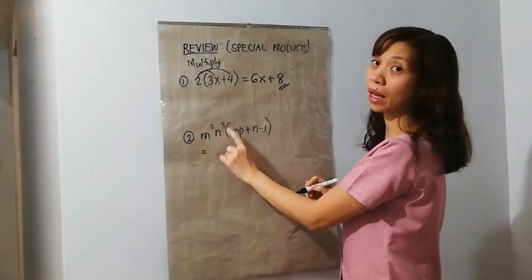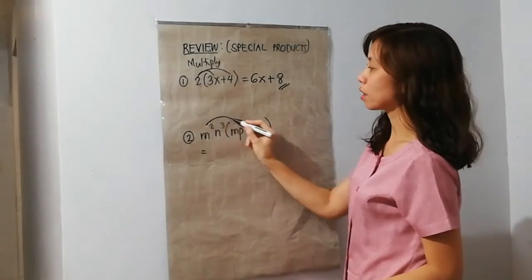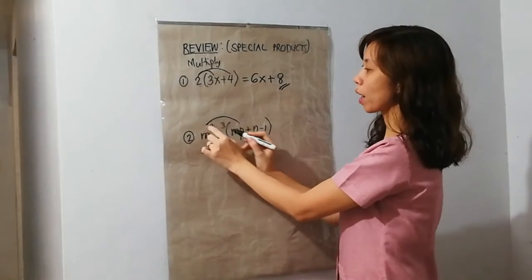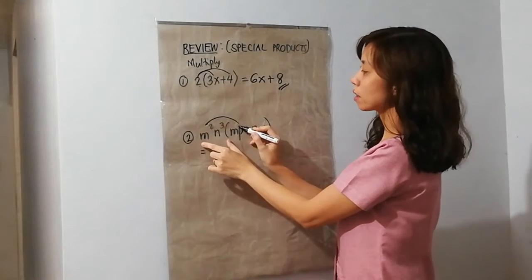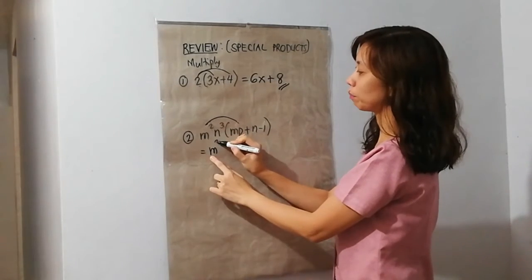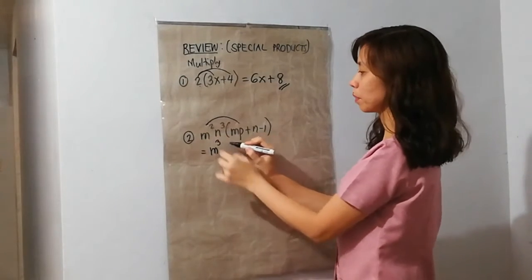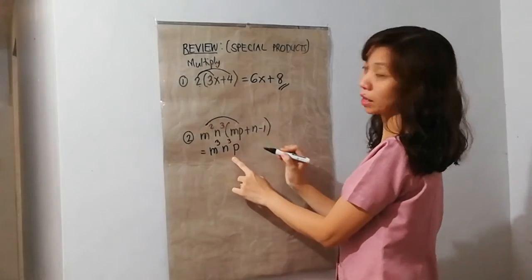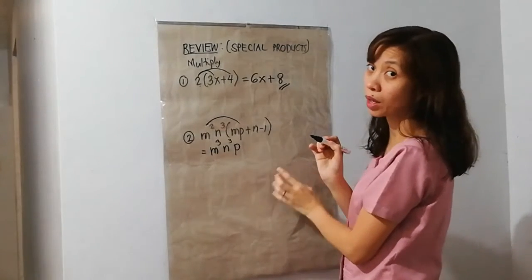Next, we have m squared n cubed times the quantity of mp plus n minus 1. Distribute natin yan — this term multiplied by this term. So, m squared — since this is m, pareho sila ng base, 2 plus 1 is 3. So, m cubed. Since walang m cubed dito sa first term, copyin na lang natin. And then yung p, copyin na lang din natin. We have 3 terms here, so dapat 3 terms din ang magiging product natin.